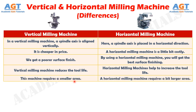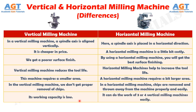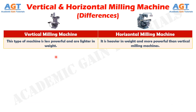A vertical milling machine requires a smaller area, whereas a horizontal milling machine requires a bit larger area. In the vertical milling machine, we don't get proper removal of chips, whereas in a horizontal milling machine, chips are removed and thrown away from the machine properly and easily. The working capacity of a vertical milling machine is low, whereas a horizontal milling machine can do the work of three or four vertical milling machines easily. Vertical milling machines are less powerful and lighter in weight, whereas a horizontal milling machine is heavier and more powerful.